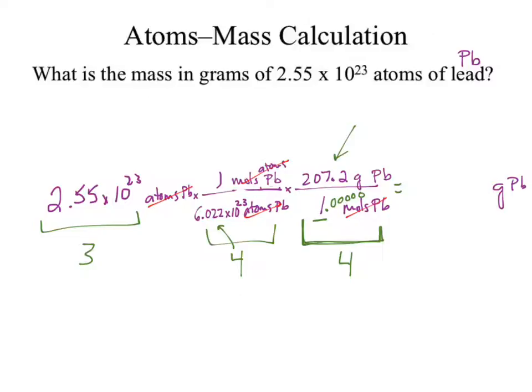The answer is 87.738. Let's take a look at sig figs — we can only carry three. One, two, three — the first insignificant digit is smaller, so the number becomes 87.7 grams of lead.